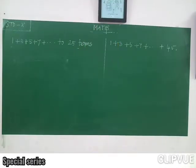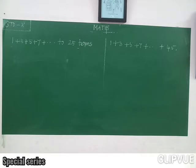Listen, here the question: 1 plus 3 plus 5 plus 7 plus and so on, 25 terms. Odd number of terms are given clearly. So actually how many terms are there? The series consists of 25 terms. Do you know the 25th term? We can find it, but we don't know now.